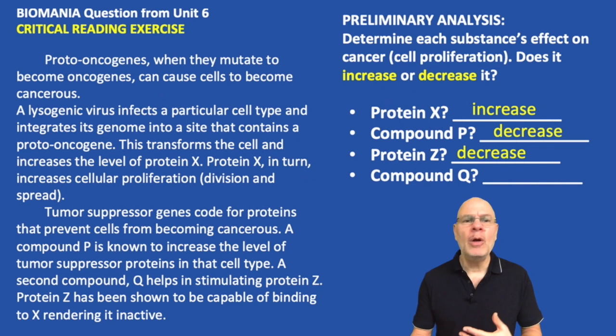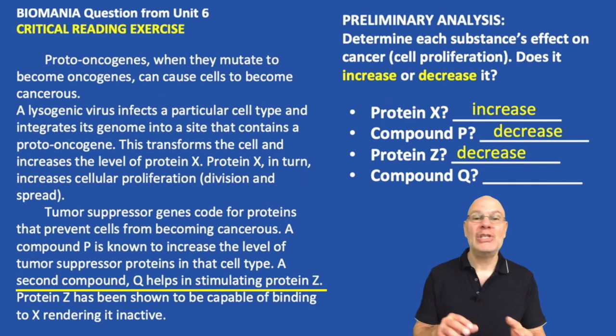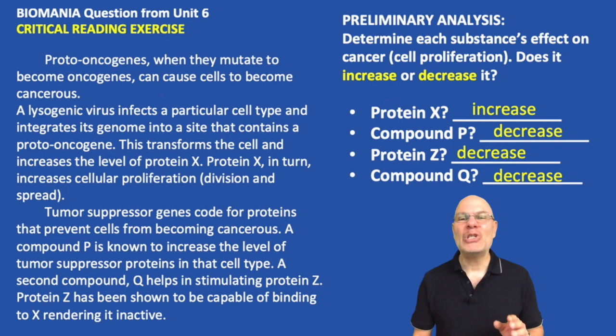It's basically interfering with something that stimulates cancer, which means it's going to have a negative effect. Finally, compound Q. Compound Q helps stimulate protein Z. So if protein Z decreases cell proliferation and compound Q stimulates protein Z, then it's also going to decrease cellular proliferation.